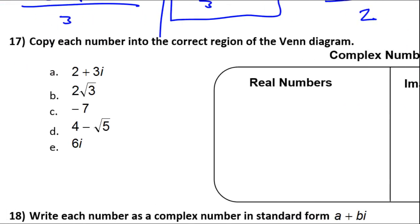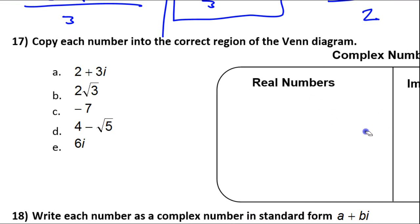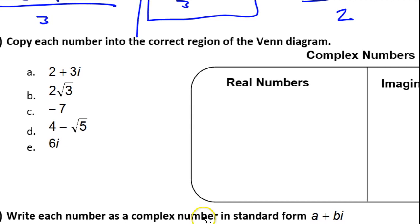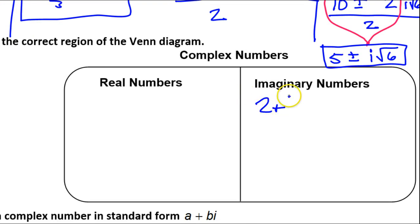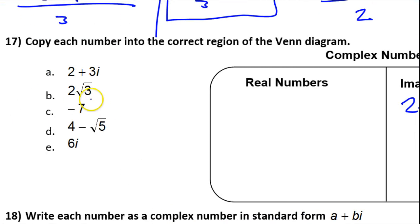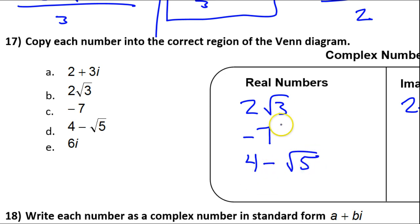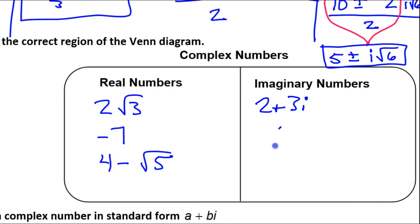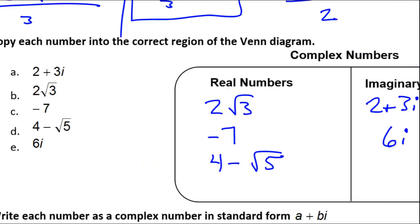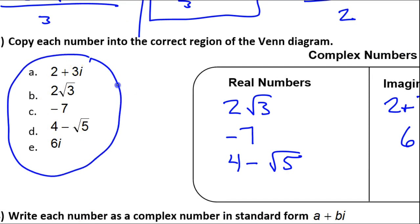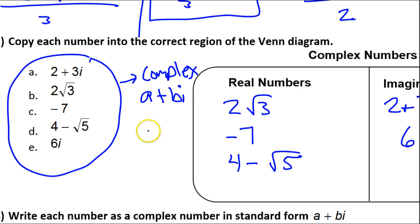As far as putting these expressions in the right place on the Venn diagram, that should be pretty easy. 2 plus 3i — it's got the i in it, so it's going to go over here in imaginary. 2 radical 3 — that's a real number, no i, so it goes on the real number side. Negative 7 — there's no i, so that goes on the real number side. 4 minus radical 5 — all real numbers. But then 6i — you see the i, so that's imaginary. But notice, all of these are complex numbers because they can all be written in the form a plus bi.